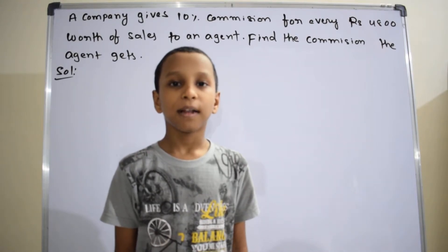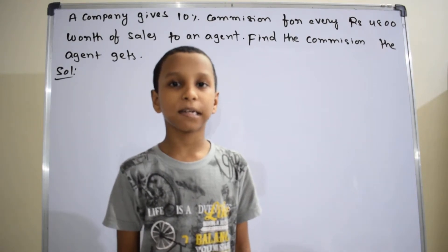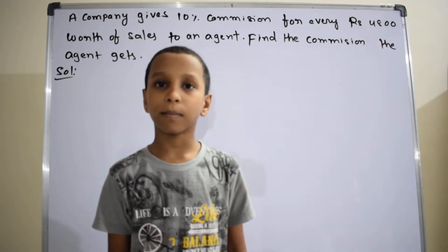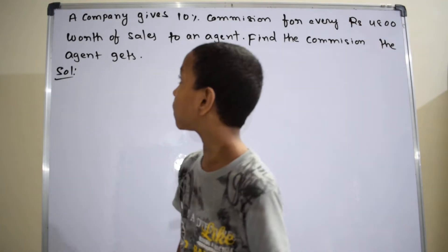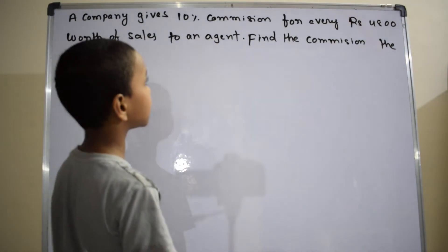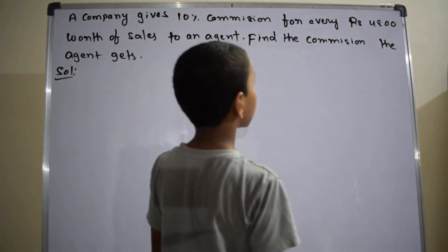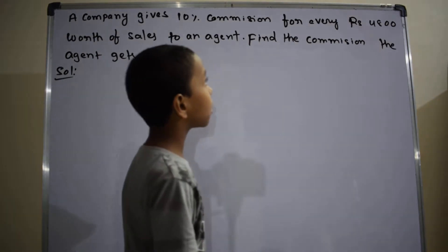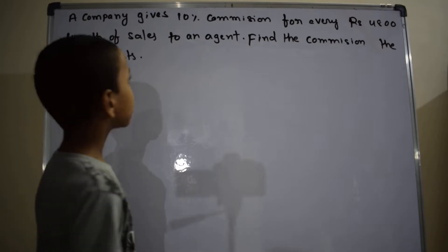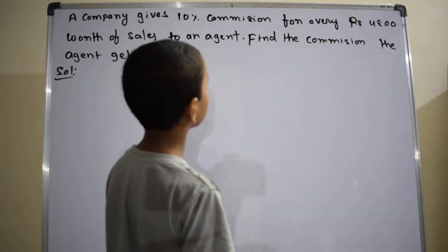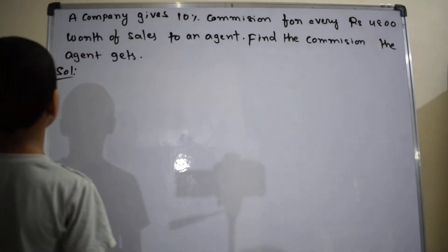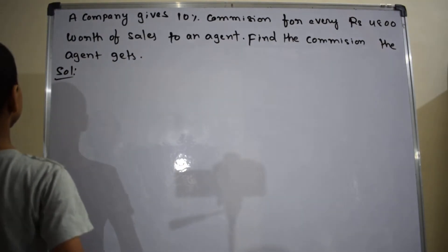Hi, I am Sarah Panchasar. Let's discuss the solution of the given problem. The problem is: a company gives 10% commission for every 4,800 rupees worth of sales to an agent. Find the commission the agent gets.